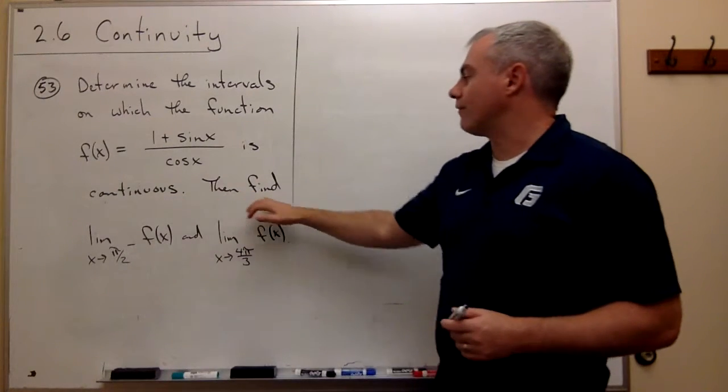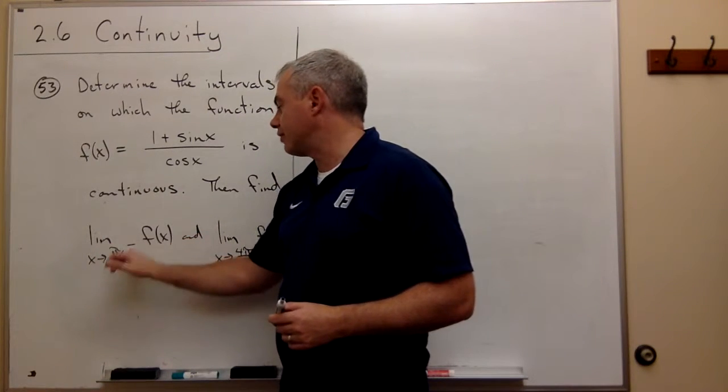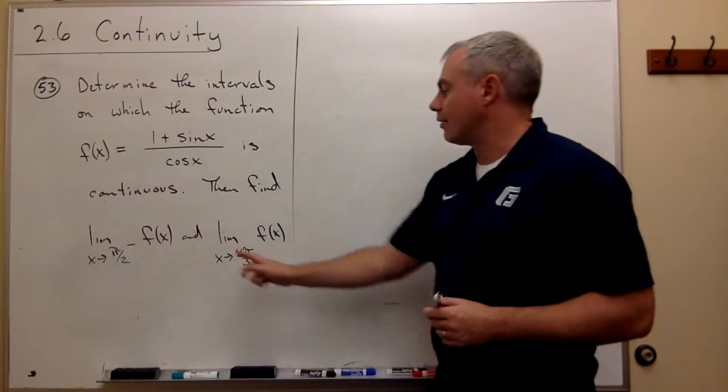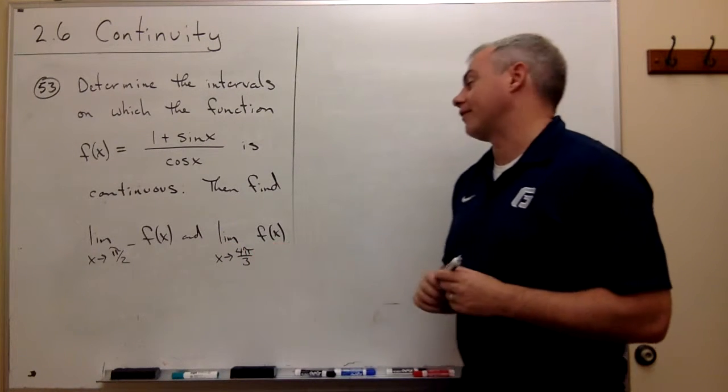And then we want to find two specific limits. We want the limit as x goes to pi over 2 from the left of f(x), and we want the limit as x goes to pi over 3 of f(x).